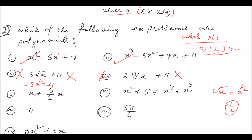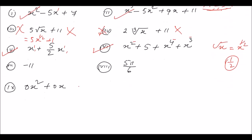Number five: x times x — x to the power one times x to the power one — today one plus one equals two, a whole number. So number five is a polynomial. Number six: checking the powers — all whole numbers — so number six is a polynomial. Number seven is minus 11.